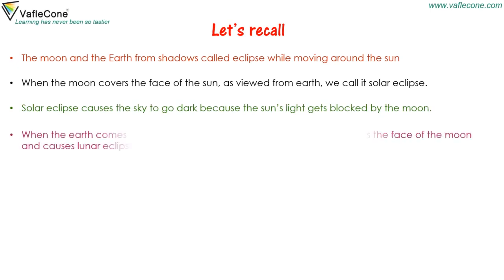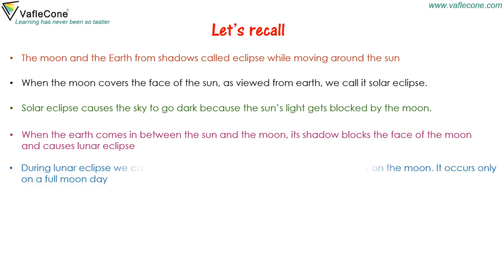When the earth comes in between the sun and the moon, its shadow blocks the face of the moon and causes a lunar eclipse. During a lunar eclipse, we can see the shape of the earth as a circular shadow on the moon. It occurs only on a full moon day.